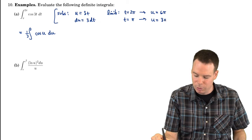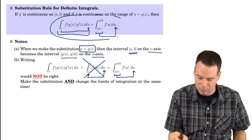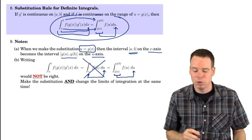And if t is pi, then u is 3pi. So those are our new limits of integration. So this is 3pi to 6pi. That's what that previous result was telling us. That's what this result is telling us here. It's telling us switch the limits of integration. Switch the limits of integration at the same time you switch the variable of integration.